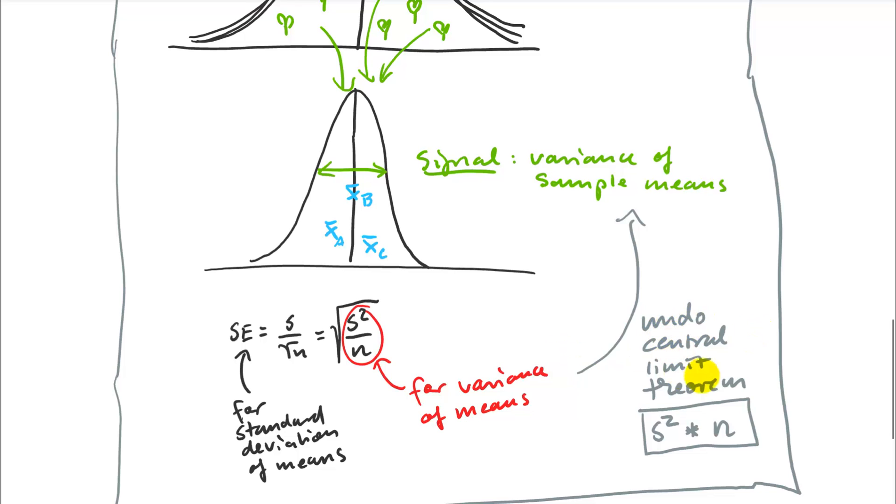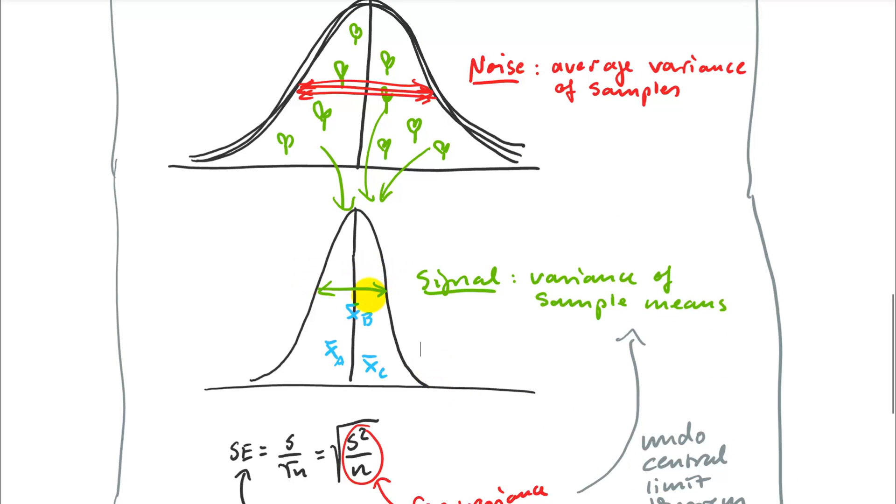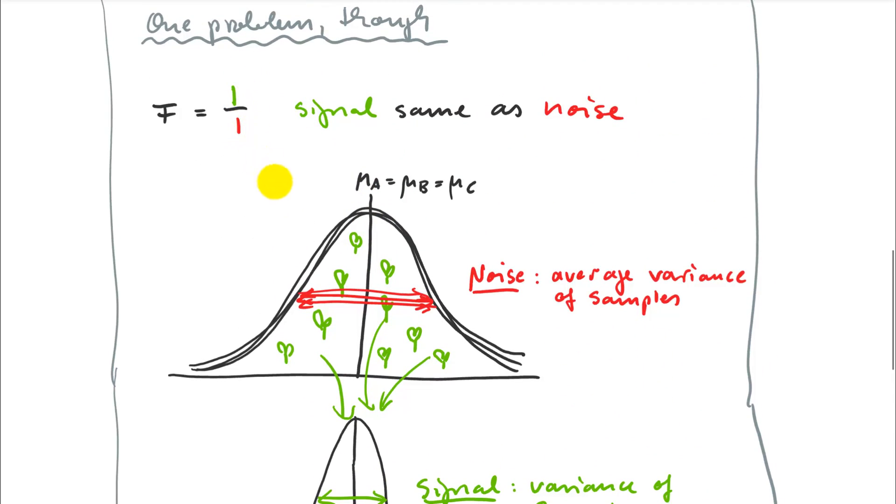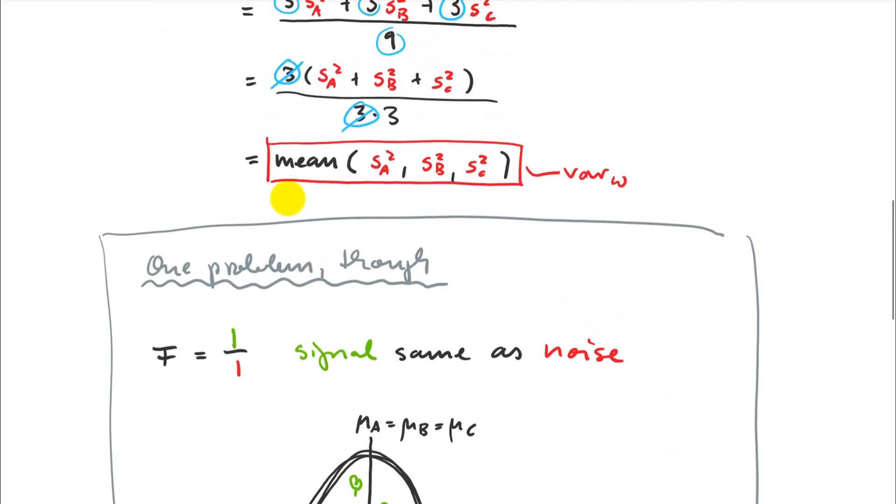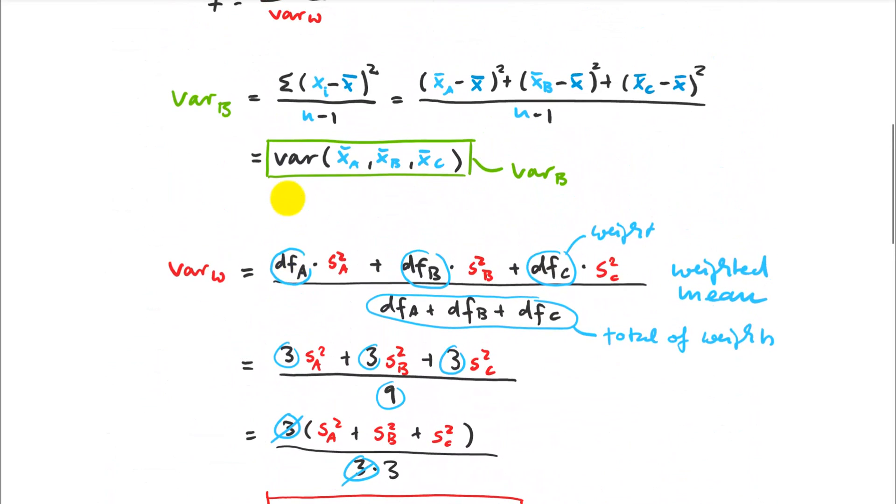We essentially have to undo the central limit theorem. Because s squared gets divided by n, I have to multiply it by n again to put those signal and noise variances on the same footing, so that I get my one to one ratio. We have to add here times sample size, the sample size that is used to calculate those means. Then I'm in business.